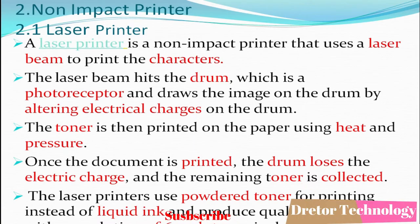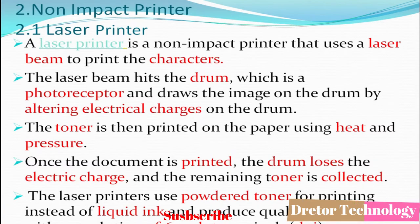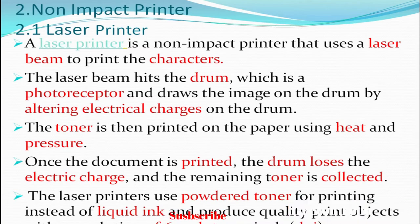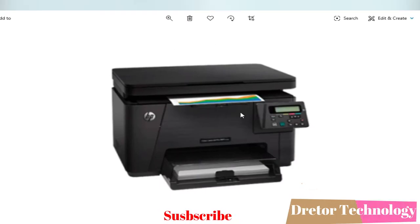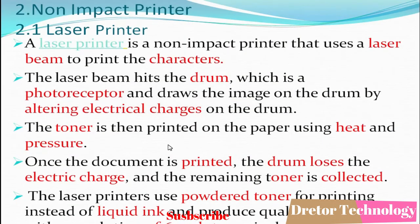A laser printer is a non-impact printer that uses a laser beam to print characters. The laser beam hits a drum, which is a photoreceptor, and draws the image by altering the electric charge on the drum. The laser printer uses powder toner instead of liquid ink and can produce print quality with a resolution of 600 DPI (dots per inch) or more. Laser printers are commonly used in offices but have a higher printing cost.